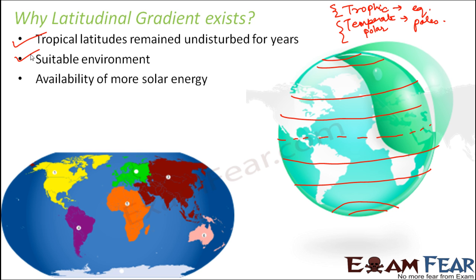Third, regions near the equator receive more solar energy due to their location. Since the sun is the main source of energy for all life on earth, greater availability of solar energy in equatorial regions supports more living organisms, resulting in higher variety of species in tropical regions.